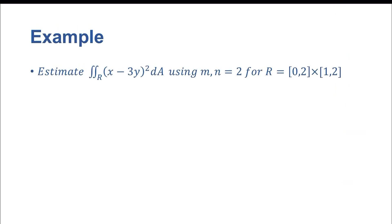Let's try an example. So let's estimate the double integral over the region of x minus 3y quantity squared dA, using two subintervals for both m and n, for the region which is defined by the Cartesian product of 0 comma 2 times 1 comma 2.